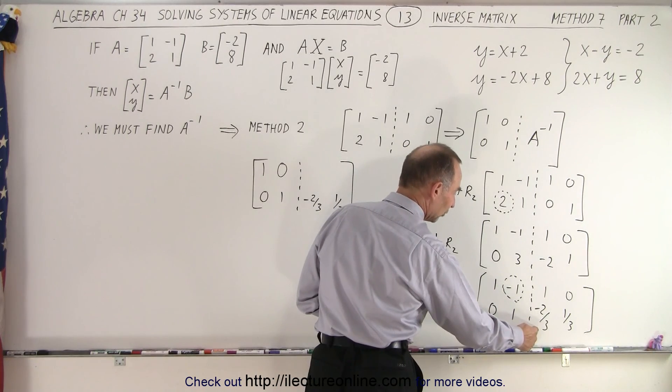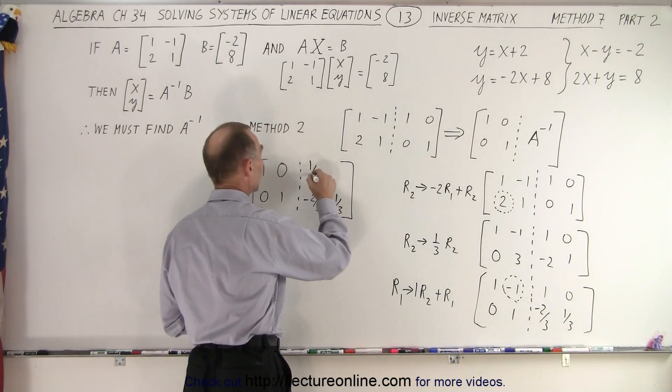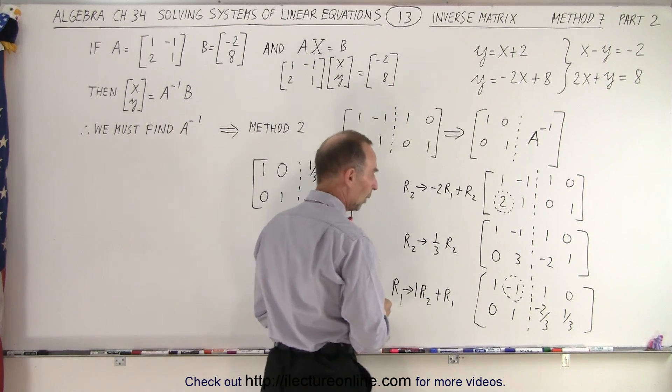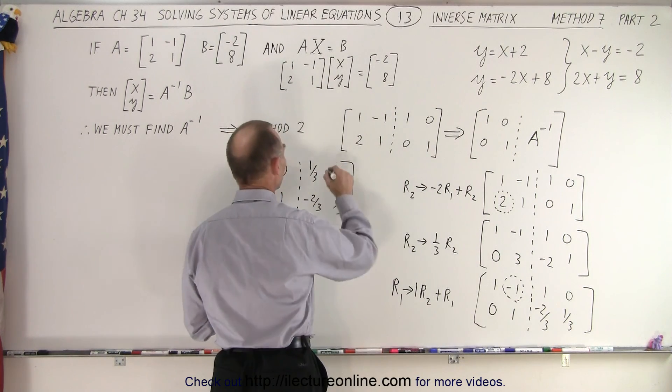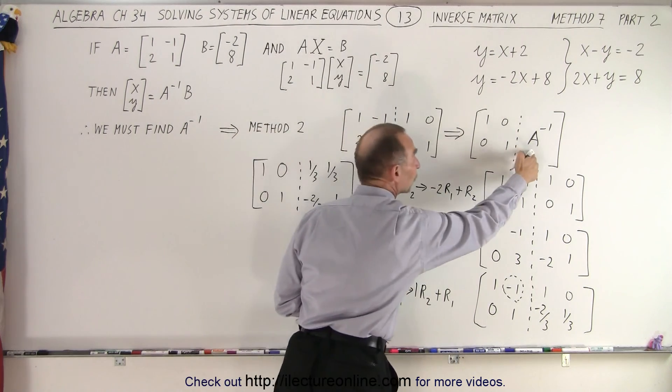Now it's 1 times negative 2 thirds, add it to positive 1, that's a positive 1 third. And 1 times 1 third add to 0, that's a positive 1 third. And notice that what we have over here is the inverse matrix of A.